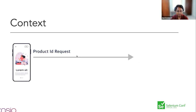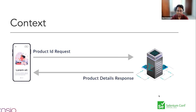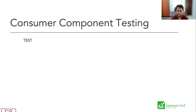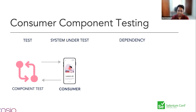We have a mobile application — let's assume it's an e-commerce app with a view product screen. It requests the details from the backend, and the backend provides the details for the requested product. Sounds fairly simple — what could possibly go wrong? How would we write the component test for the mobile application's view product screen? Since the application is requesting data, we'll call it the consumer; since the backend is providing data, we'll call it the provider.